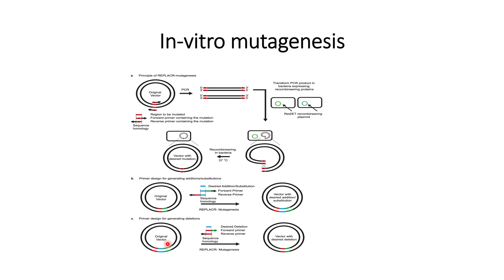The deletion sequence comes between the forward and reverse primer on the side not included in the PCR reaction. The PCR product starts from a point and goes in the anticlockwise direction, ending at the reverse primer. The forward and reverse primers are joined together in the bacteria containing recombineering proteins, so the final product will be devoid of the desired deletion that was present in the original vector.